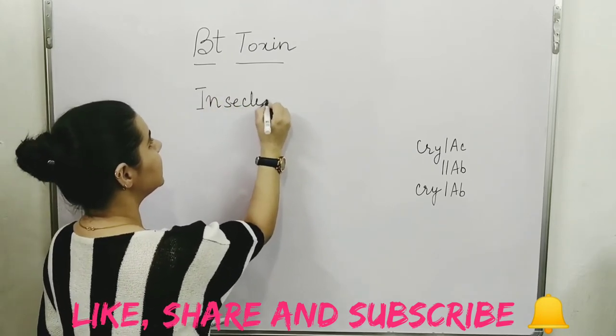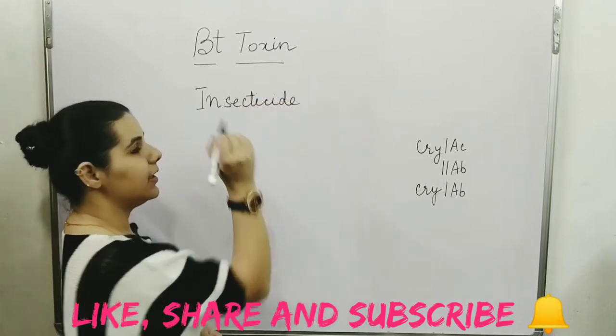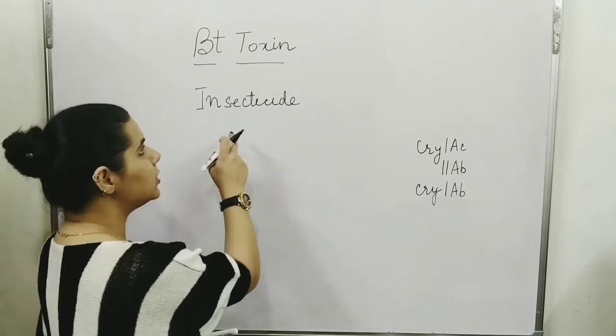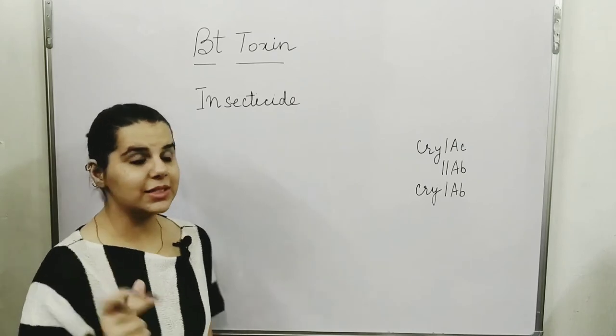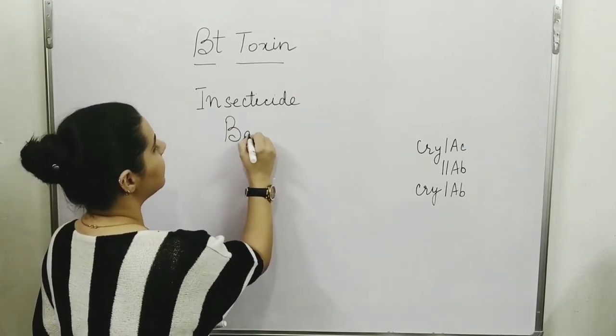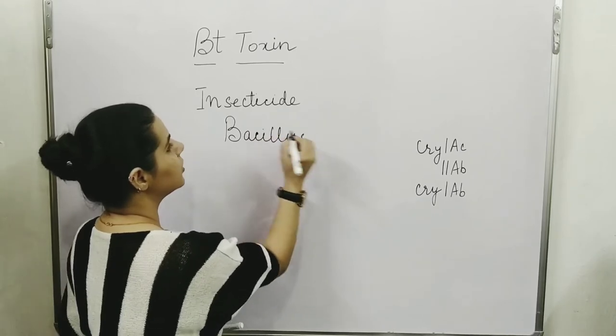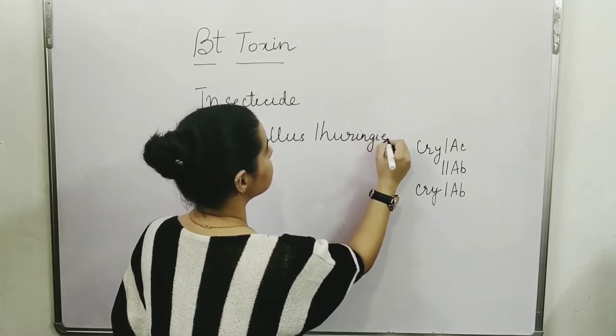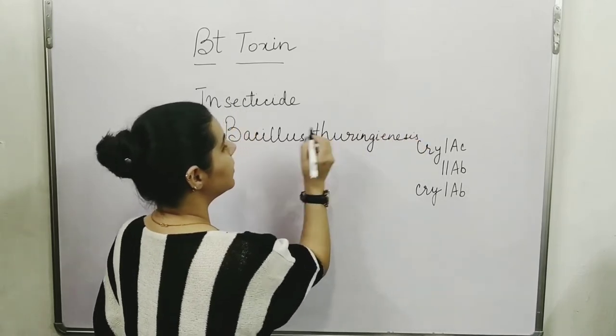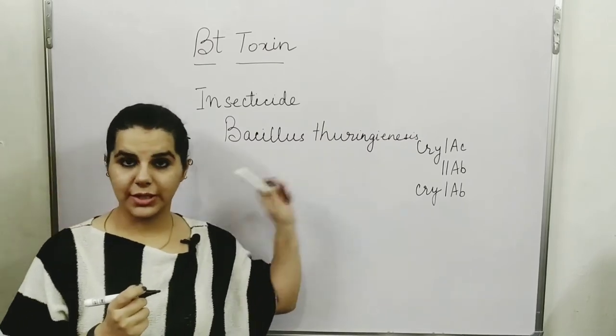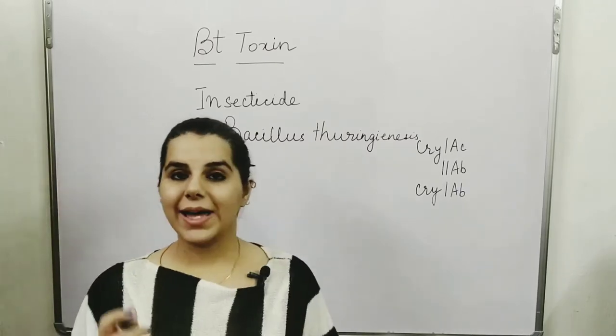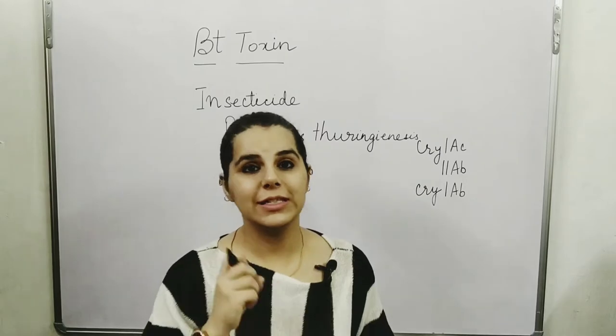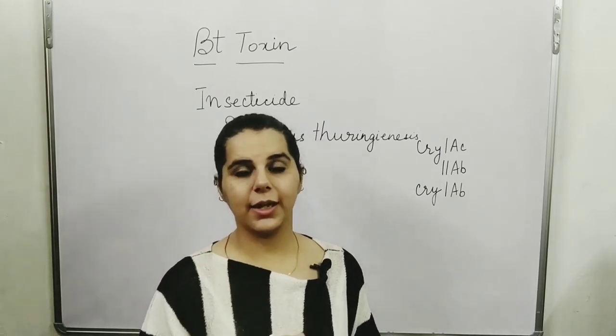This BT toxin is used as an insecticide, which is a chemical that kills insects. We get this from bacteria called Bacillus thuringiensis, and this BT toxin we use as an insecticide in the cotton plant.